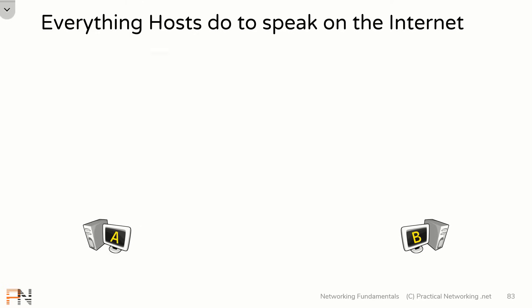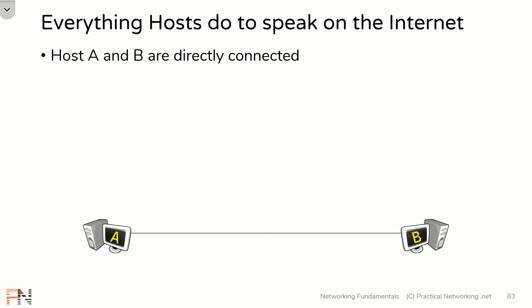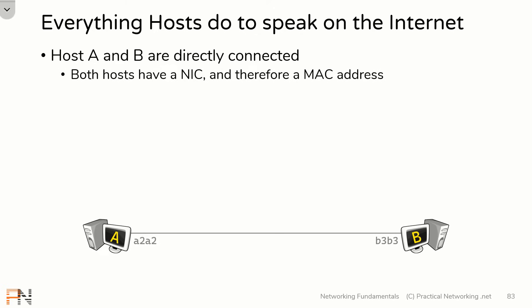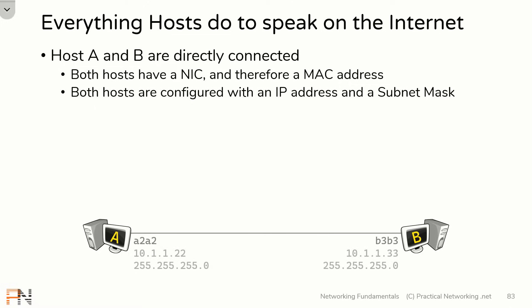So here we have two hosts, and these two hosts are directly connected to each other. Now they don't know that, so what they're going to be doing is identical if there were hubs or switches in the mix. Both of these hosts have a NIC, which this wire is physically connected to, which means both of these hosts have a MAC address. I'm providing only the first four digits of each host's MAC address to conserve screen real estate. Moreover, both of these hosts have IP addresses and subnet masks.